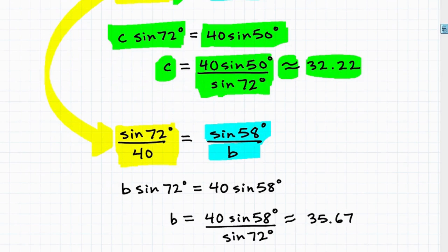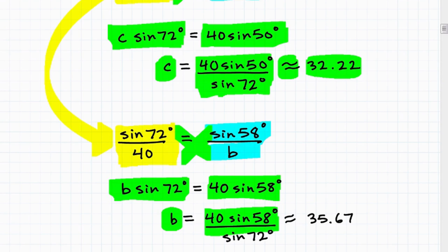So that's going to be sine of 58 over length B. Again, I'm going to go ahead and use the cross product here. So B times sine of 72 degrees, 40 times sine of 58 degrees. I'm going to divide everything by sine of 72. I get this.